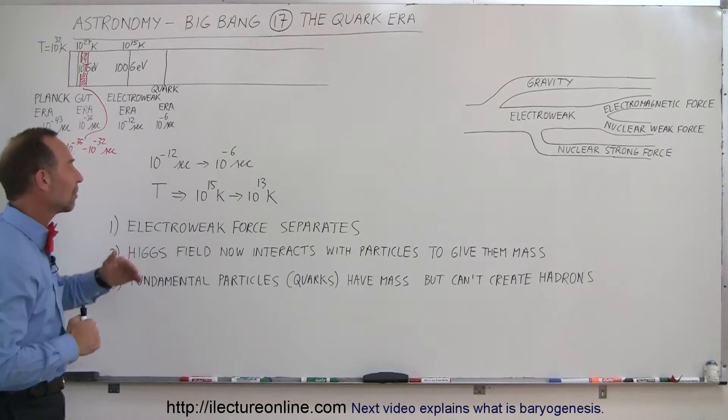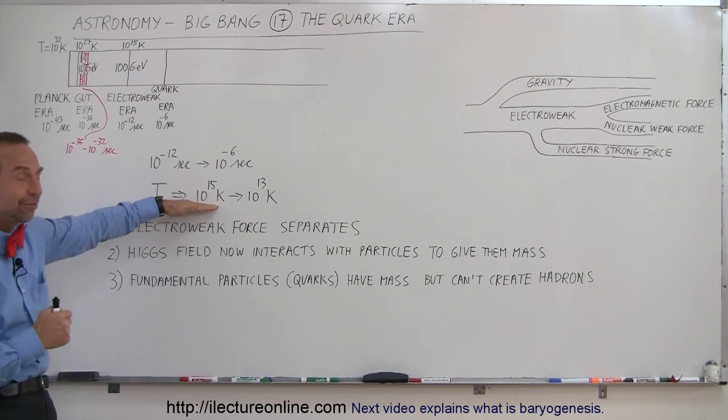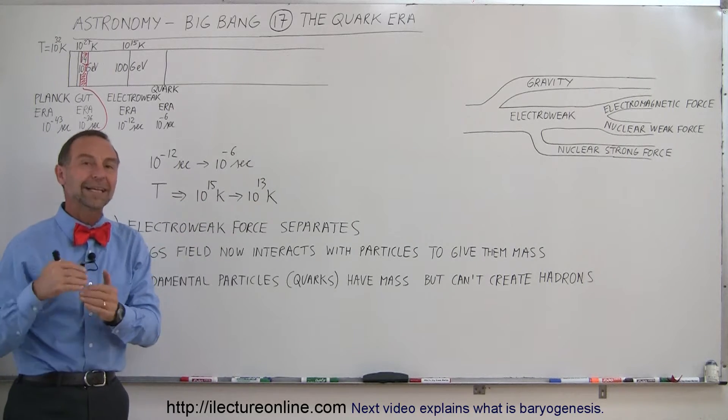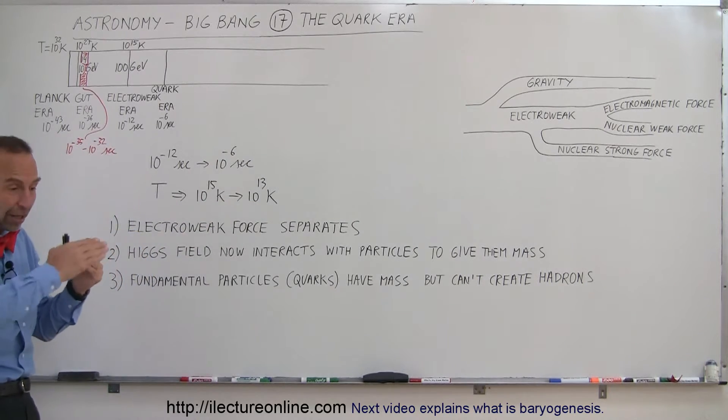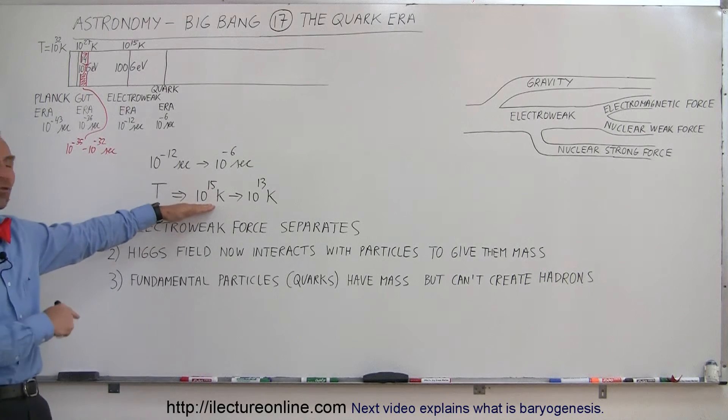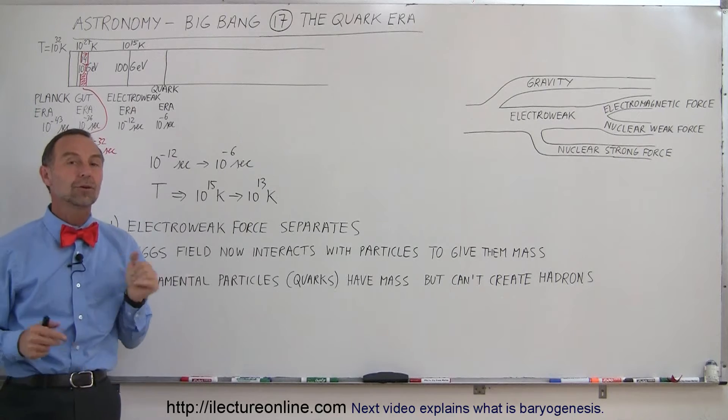The temperature is still dropping. The temperature now reached a temperature of 10 to 15 Kelvin at the beginning of the quark era and 10 to the 13 Kelvin at the end of the quark era. So the temperature is dropping rather quickly from a thousand trillion to 10 trillion degrees Kelvin.